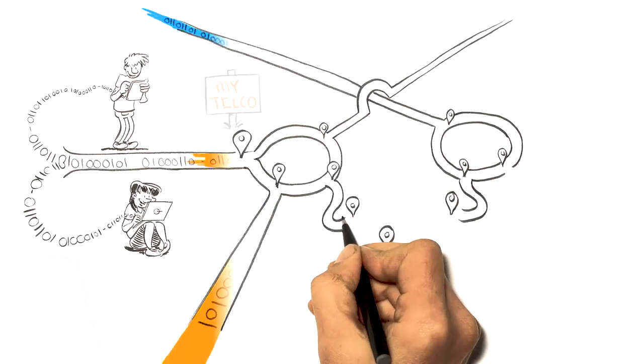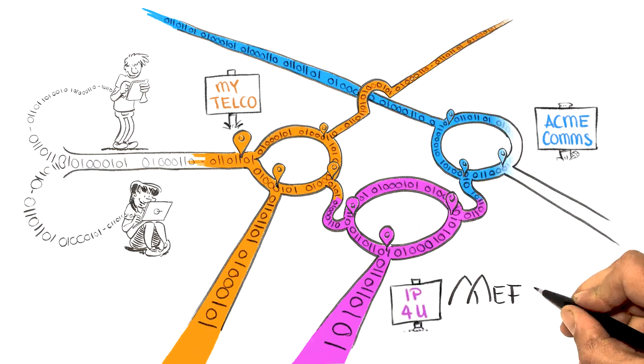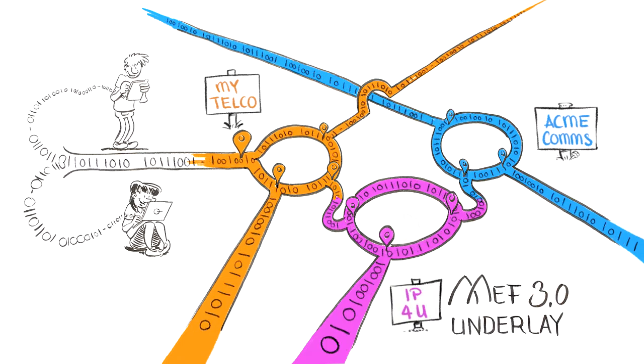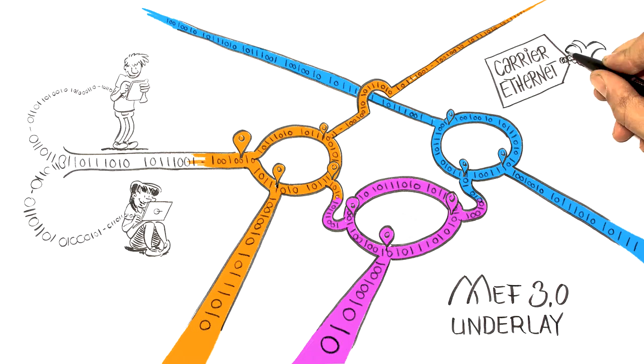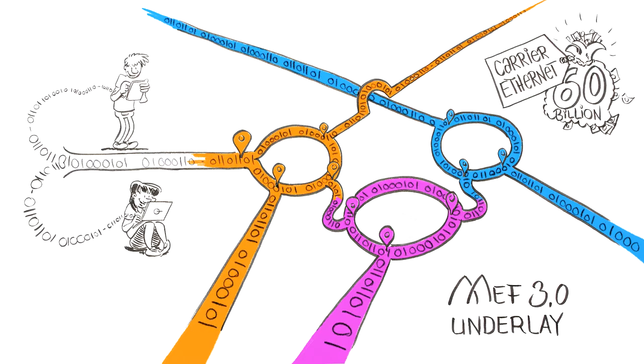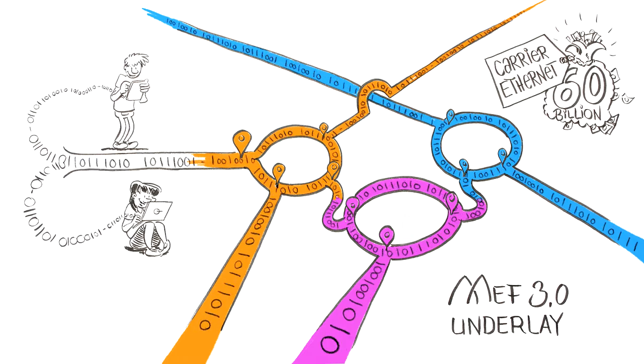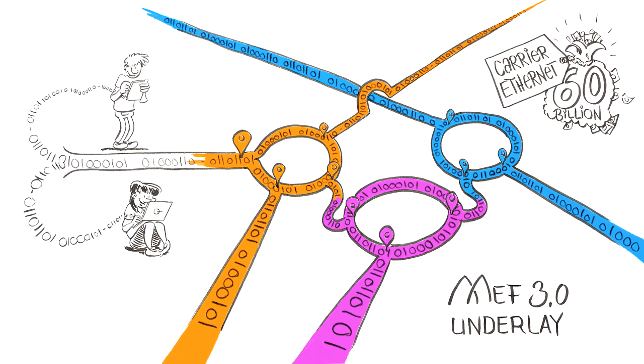The pinnacle of these networks uses MEF 3.0 standardized underlay connectivity services. Carrier Ethernet services alone are now a 60 plus billion US dollar market. Along with MEF 3.0 optical transport and IP services, providers have technology agnostic services with great flexibility.